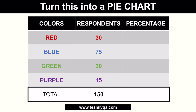How do we turn that into a percentage? For example, for red, you have 30 respondents. Divide it by the total, which is 150, then multiply by 100. Since 10% of 150 is 15, and 30 is twice 15, the red percentage is 20%. The long-cut formula is 30 ÷ 150 × 100 = 20%.